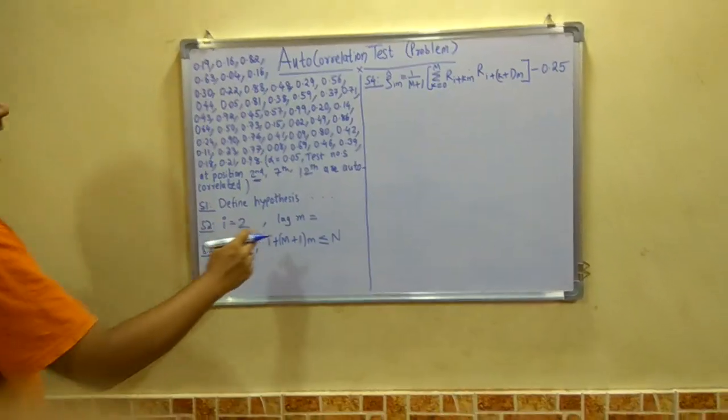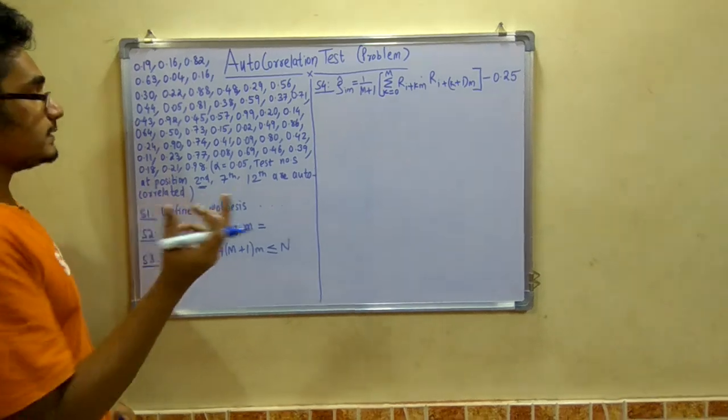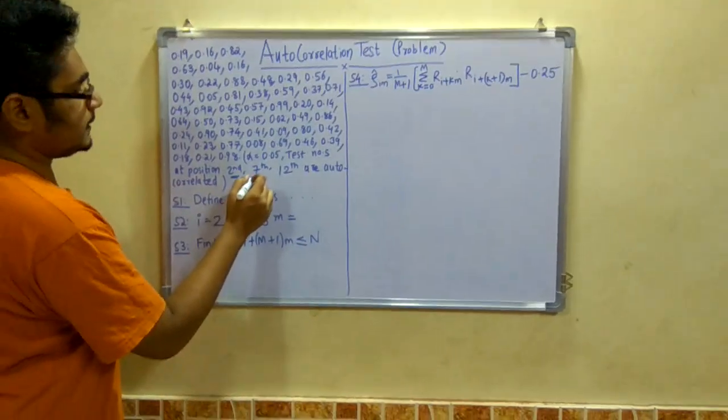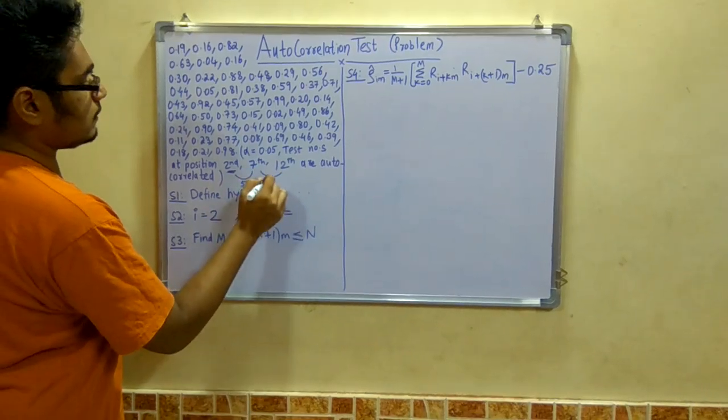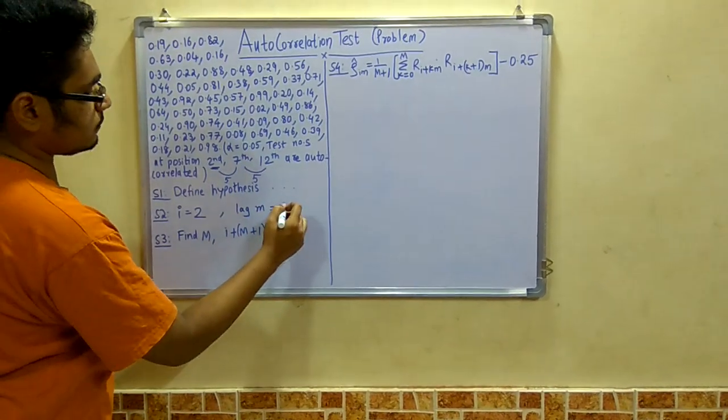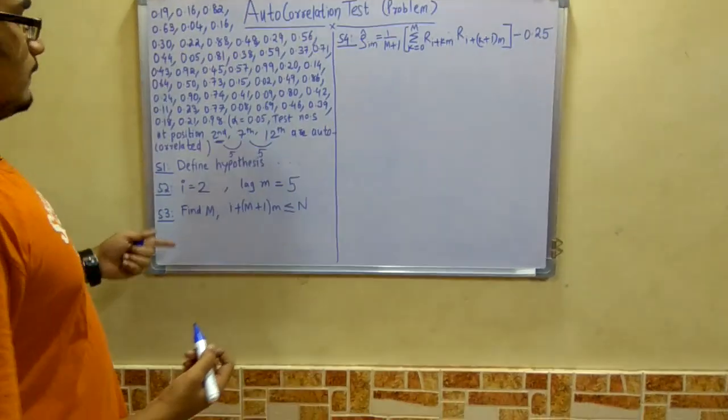So i will be 2 and lag m. Lag m as I said is the difference. Like difference between 7 and 2 is 5. And 12 and 7 is also 5. So 5 remains constant. So 5 will be lag m.